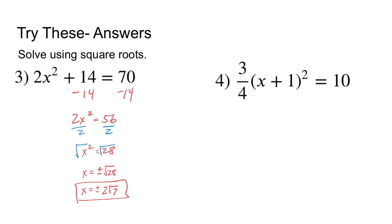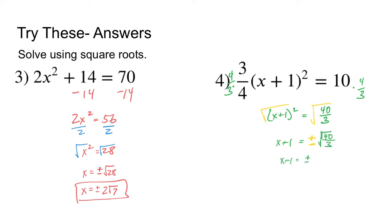Number 4: 3 fourths times the quantity of x plus 1 squared. The first thing I'll do is multiply both sides by 4 thirds, which gives x plus 1 squared equals 40 over 3. Then take the square root of both sides — don't forget that plus or minus — giving x plus 1 equals plus or minus the square root of 40 over 3. Rationalizing the denominator gives the square root of 120 over 3. So the final answer, after subtracting 1 from both sides, is negative 1 plus or minus the square root of 120 over 3.